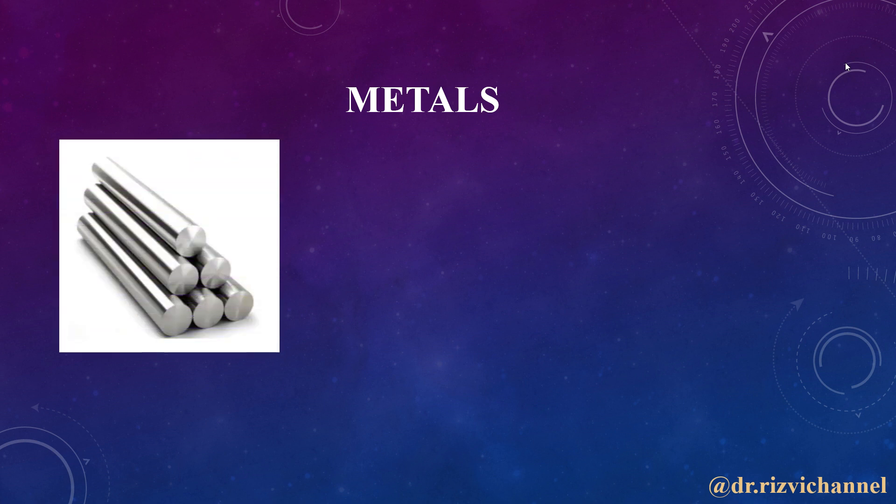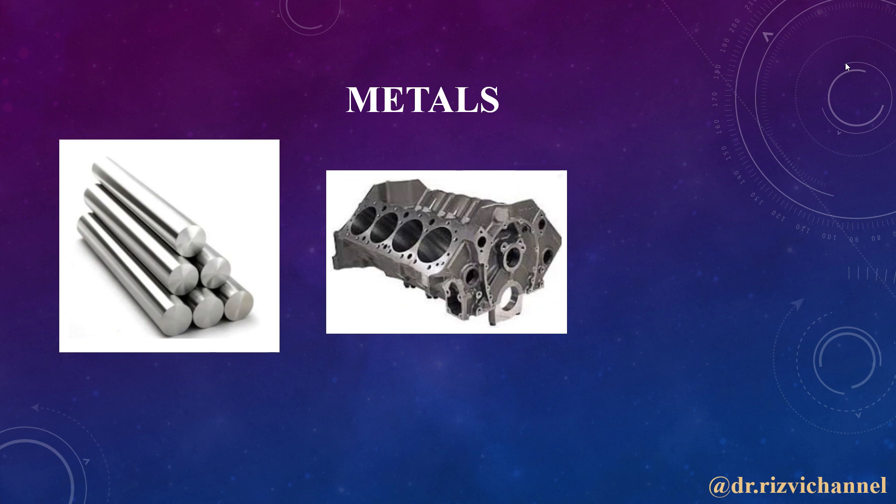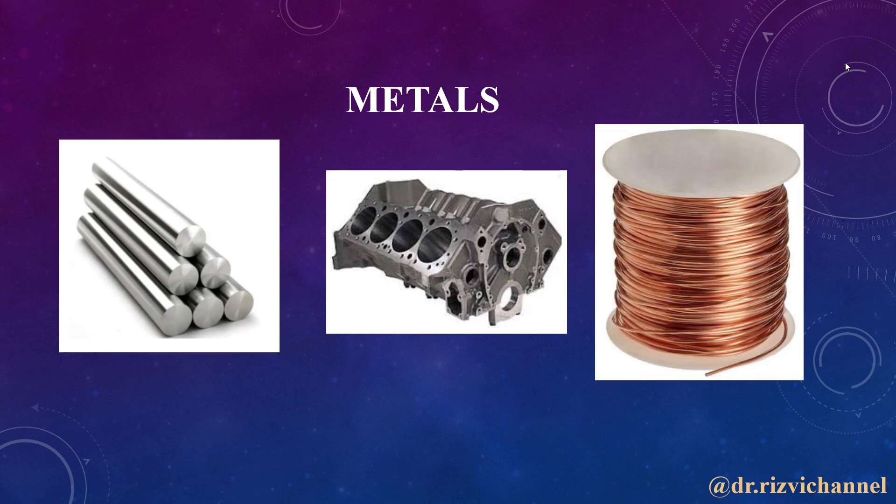These are a few examples of metals: steel rods, engine cylinders made of cast iron, and copper wire. These are the metals that are used in industries and engineering applications.